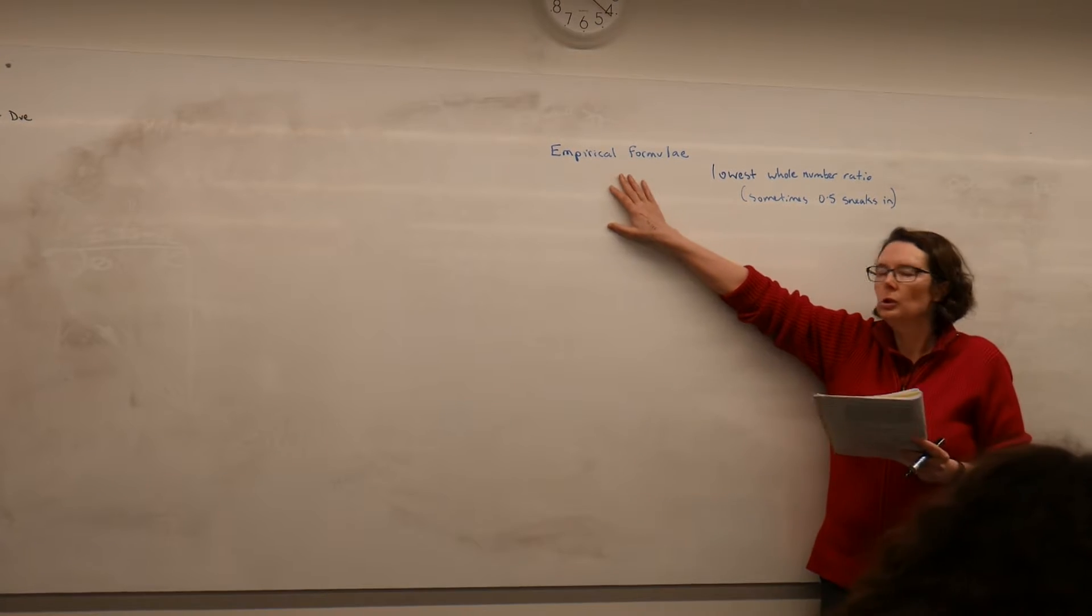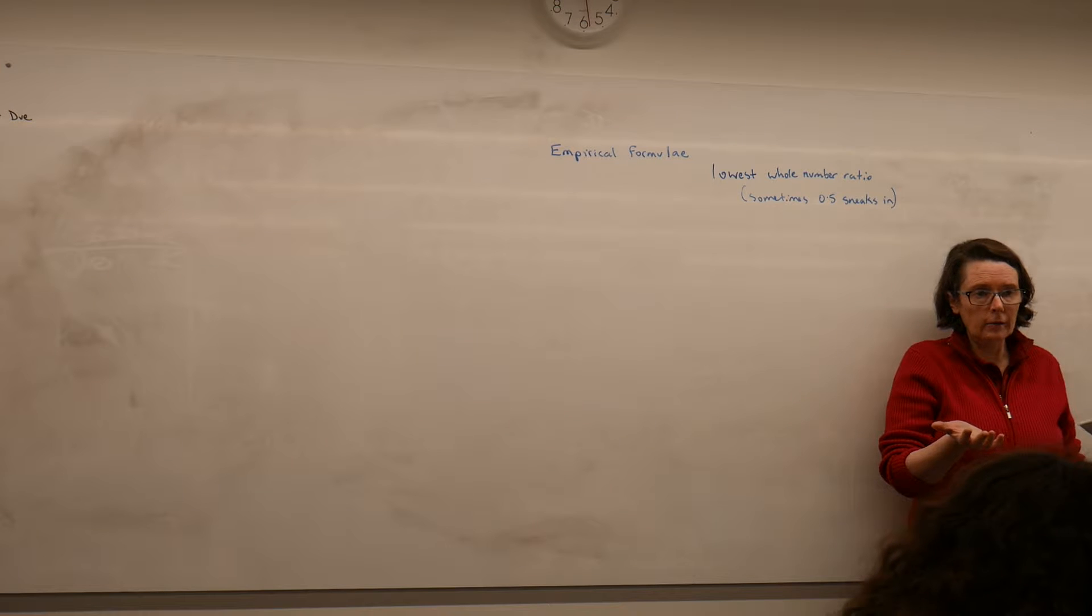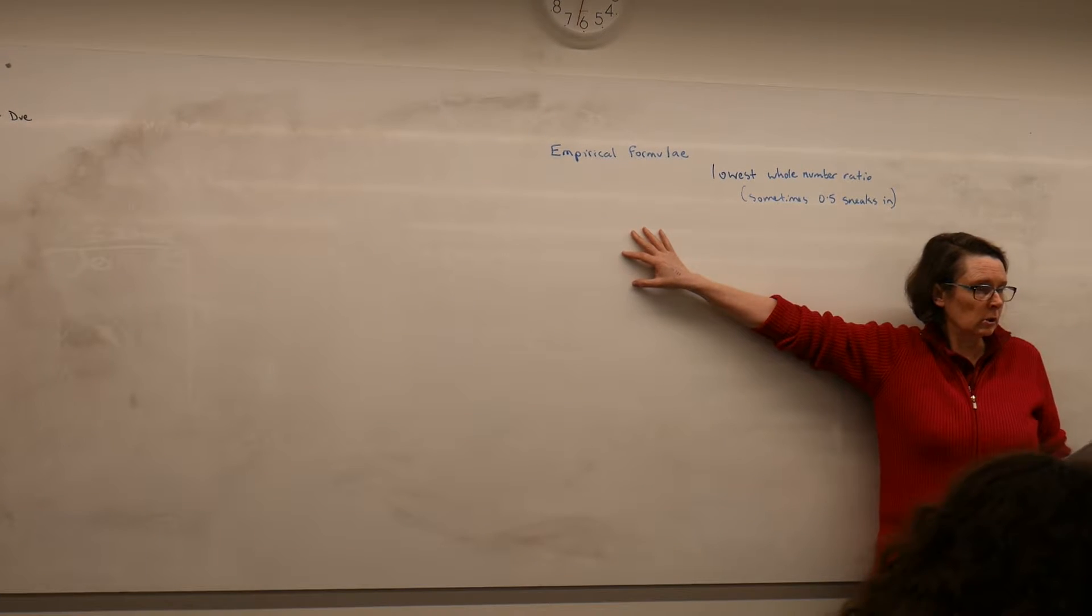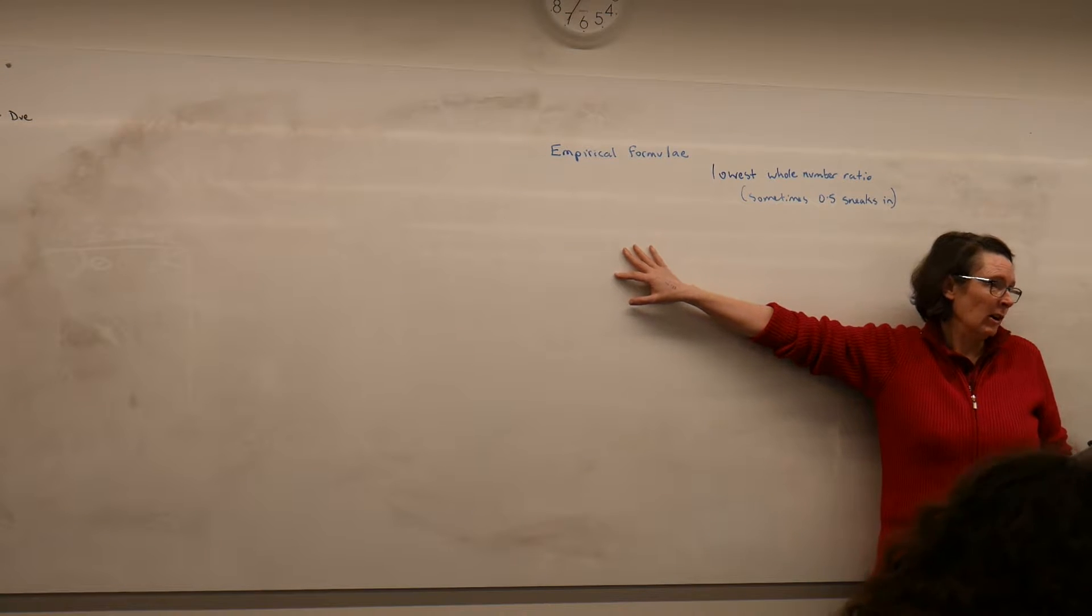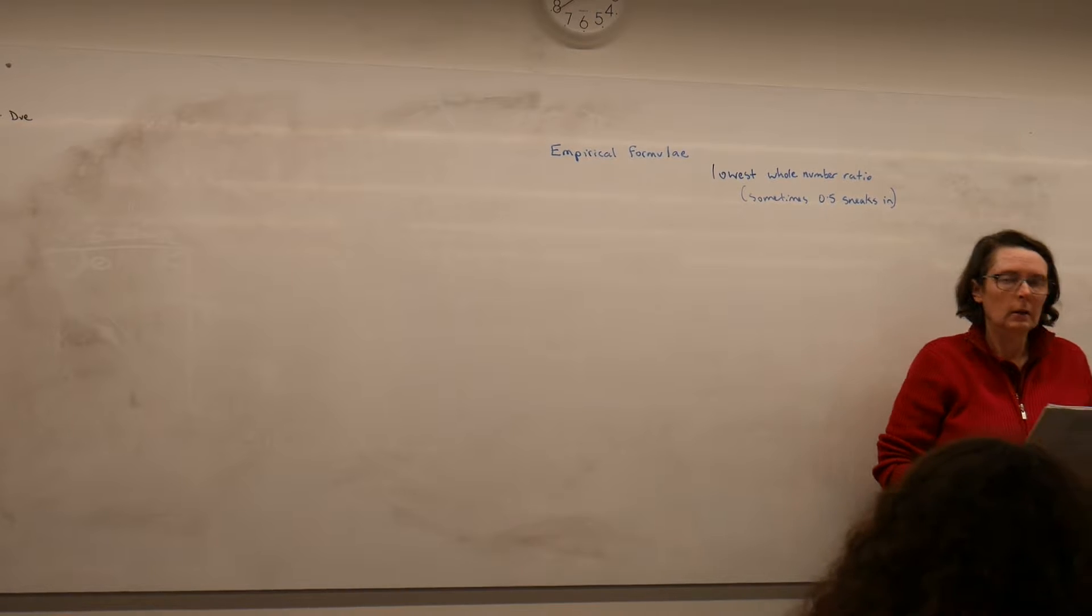And the last time we used this term was when we were talking about ionic compounds. And the naming that we have for our ionic compounds is an empirical formula because it's the smallest whole number ratio of the ions present in the ongoing lattice.